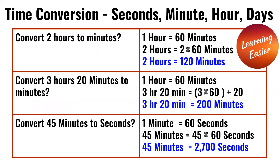Convert three hours and 20 minutes to minutes. We know one hour is 60 minutes. So three times 60 is 180. 180 plus 20 is 200. So three hours and 20 minutes is equal to 200 minutes.